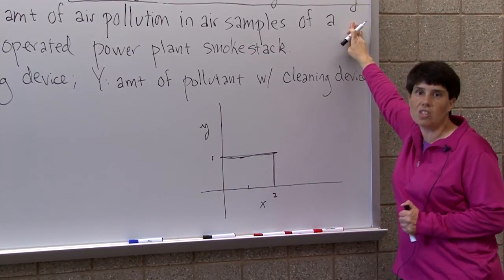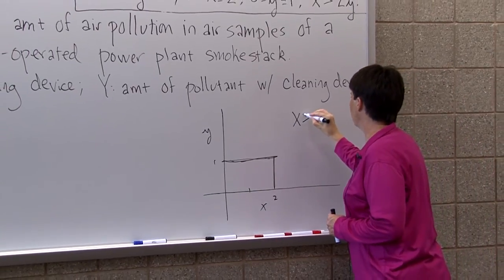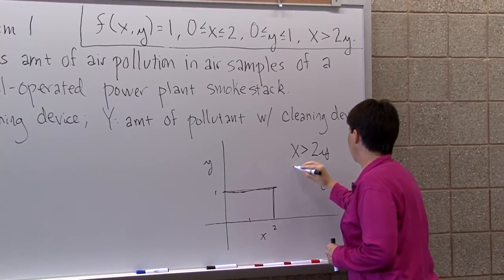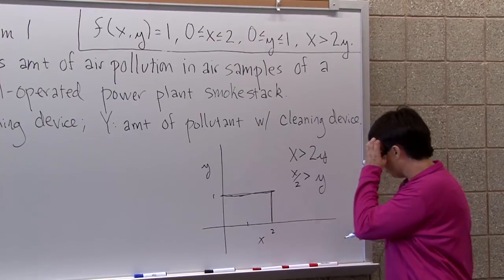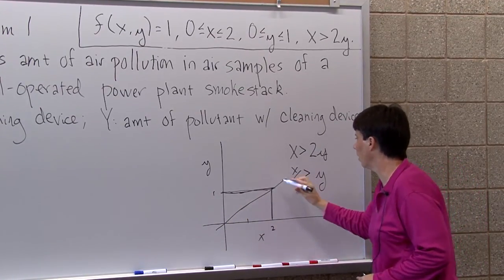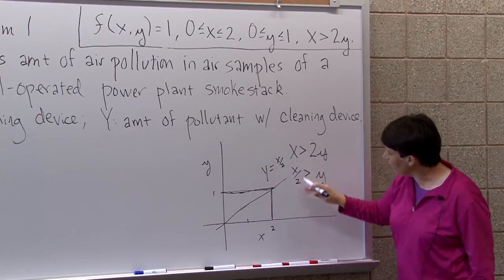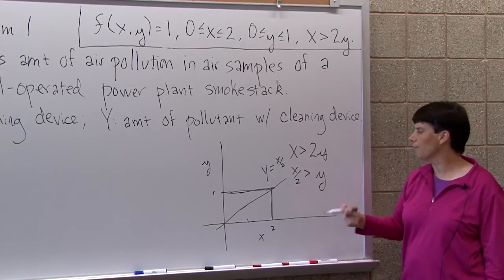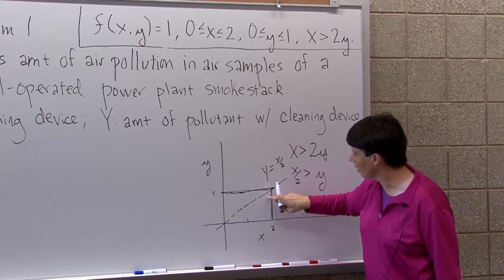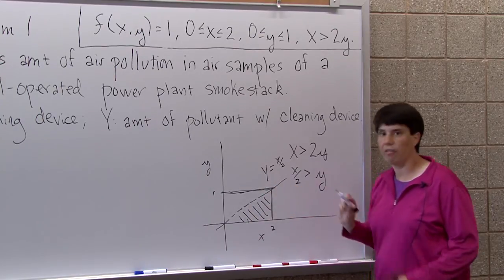Okay, and I have a follow-up condition that X has to be greater than two Y. So X greater than two Y means that Y is less than X over two. So if you think about it, I have a line going through right here. This is the line Y equals X over two. And I want Y's that are less than X over two. So technically, it doesn't matter because this is continuous, but this should be a dotted line, right? And I want everybody down here.